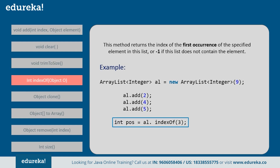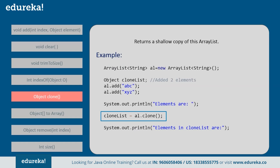Next is indexOf() — this method returns the index of the first occurrence of the specified element in the list. If that element is not present, it returns -1. For example, if you want the index of 5 and write 5, it will return index 2. But if you try to find the index of 3, which is not present in the ArrayList, it will return -1. Next is clone() — this method returns a copy of the ArrayList. For example, if you add two elements and clone the ArrayList, the clone list will return all elements present in the original.